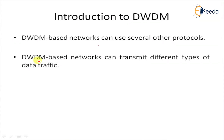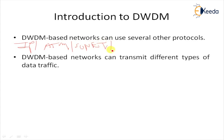WDM-based networks can use several protocols, such as IP, SONET, SDH, ATM (Asynchronous Transfer Mode), and Ethernet. All these protocols are used to transmit and process data traffic at speeds ranging from 100 Mbps to 2.5 Gbps.